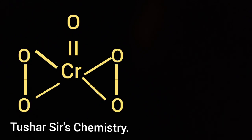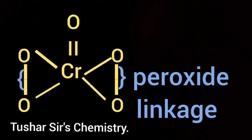Out of 5 oxygen atoms, 4 oxygen atoms are linked to the central chromium atom by peroxide linkages. The fifth oxygen is connected to chromium by a double bond.